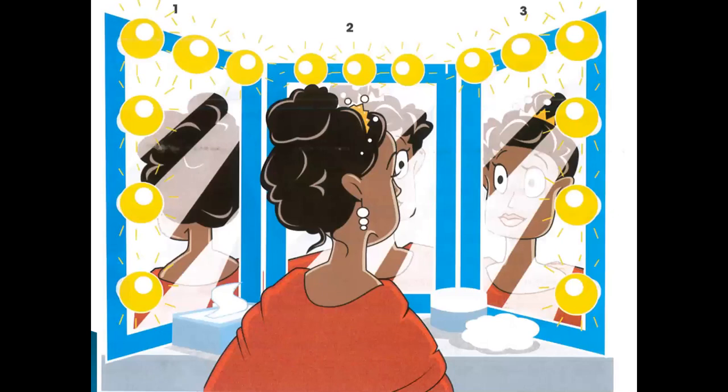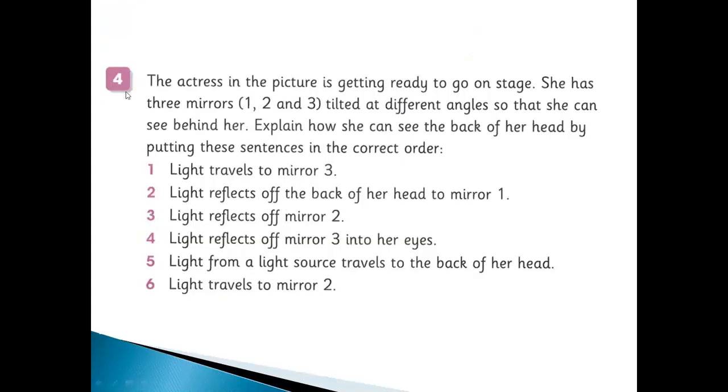You can see here makeup. There are three mirrors - one, two, three. The actress in the picture is getting ready to go on stage. She has three mirrors tilted at different angles, not straight, at different positions, so that she can see behind her also. Explain how she can see the back of her head by putting these sentences in order. Let's start.